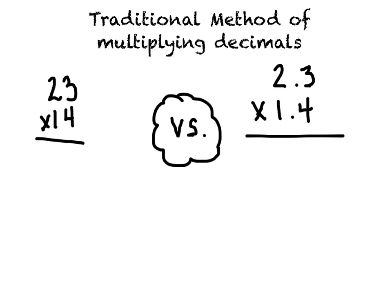So if we were doing 23 times 14: 3 times 4 is 12, carry up the 1, 4 times 2 is 8, 1 more is 9, put down our 0, 3 times 1 is 3, 2 times 1 is 2, and add those quantities together. So we'd have 322 as our total. For multiplying 23 times 14, the product or the answer is 322.